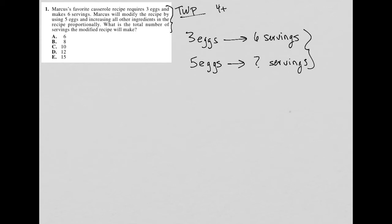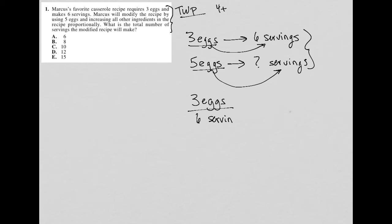What we can do is compare the number of eggs to the number of servings in a ratio and set up a proportion between these two relationships. If I know that for every three eggs I get six servings, then that should be proportional to five eggs over X servings. Whatever X is should be proportional to three over six.